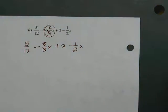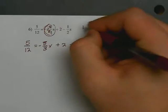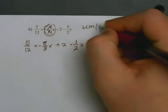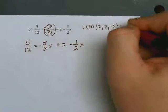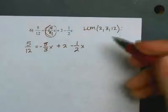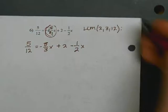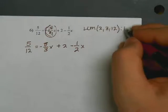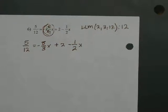Now I find the LCM of the denominators: two, three, and twelve. Most of the time your LCM is going to be your biggest number — just make sure two and three go into it. They do, so the LCM is 12. I'll multiply both sides by 12.